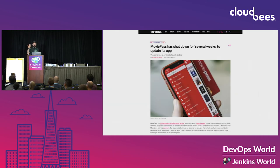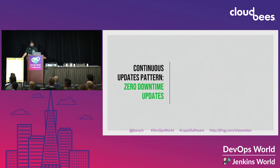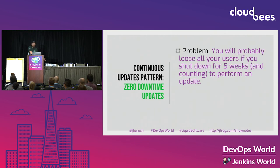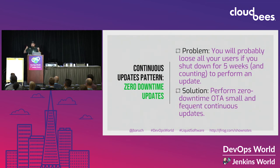My favorite: MoviePass shut down for several weeks to update their app - and this was still ongoing at the time of the talk. They will lose all their users if they're down for five weeks to perform an update. The pattern is zero downtime updates. Not five weeks - zero. Do small and frequent updates instead.